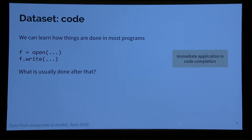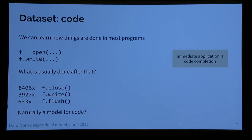There are two main datasets I want to mention. The first is code itself. Think of it like Python: when you say f equals open, and then f dot write, the question is — what is usually done after that? This is an immediate application for code completion. In a recent model, after f dot write, you would either do f dot close, probably more writes, or flush — with different probabilities. That's naturally a model for code. You can think of it as an n-gram model, or do neural models based on traces over f.